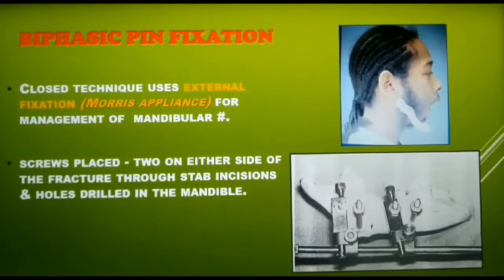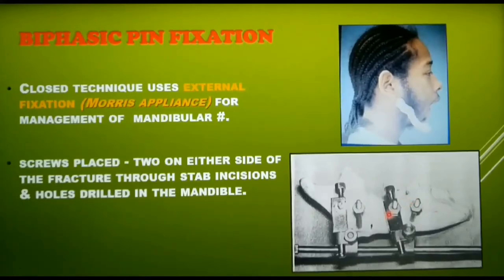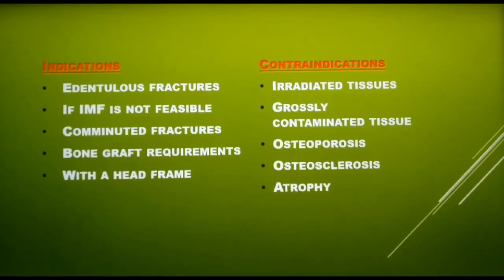Biphasic pin fixation is a closed technique using external fixation. Though the fracture is not exposed, a stab incision is made on the skin to fix two screws on each side of the fracture. The pins are locked and have an extension out of the skin, and are removed after fracture healing. Biphasic pin fixation is used in edentulous fractures where intermaxillary fixation is not feasible and in comminuted fractures requiring bone grafts. It is contraindicated in irradiated or grossly contaminated tissues and in certain bone anomalies like osteoporosis and osteosclerosis.